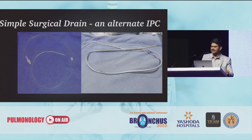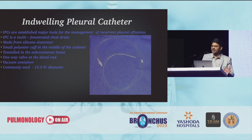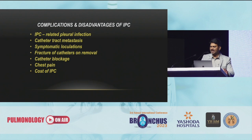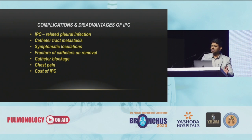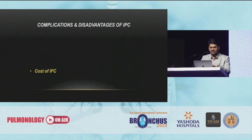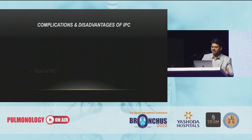Then coming to the surgical drain as a solution for indwelling pleural catheter. The efficacy and safety of indwelling pleural catheter is well established, no doubt about it. But every procedure has its own disadvantages. IPC has complications like IPC-related pleural infections, catheter tract metastasis, symptomatic loculations, fracture of catheters while removal, blockage, and chest pain. The most important thing is the cost of IPC. We concentrated mainly on cost, because in our country it costs around $30,000 to $40,000. Most of my patients cannot afford the cost of IPC.